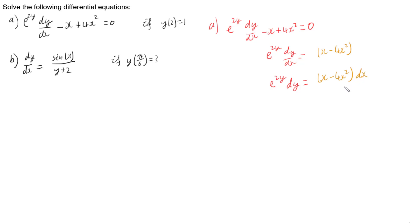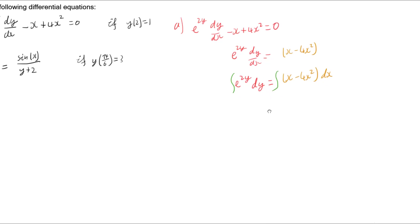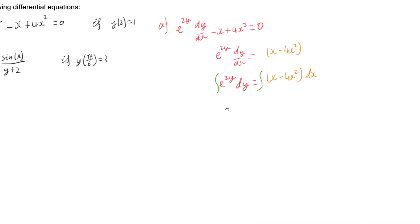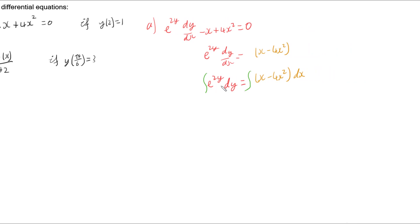Now that we've isolated the variables we can integrate both sides. e to the 2y integrates to e to the 2y divided by 2, x integrates to x squared over 2, and minus 4x squared integrates to minus 4x cubed over 3, and of course at the end we end up with a constant.